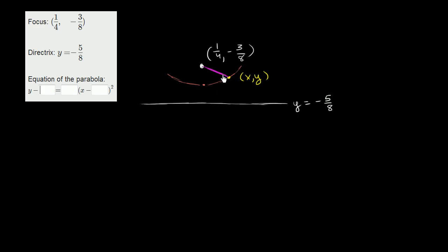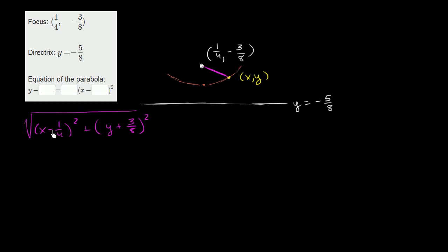That distance comes straight out of the distance formula, which comes from the Pythagorean theorem. It's going to be the square root of (x - 1/4)² + (y - (-3/8))², which is (y + 3/8)². The distance between that same point and the directrix is just a straight vertical line — it's y minus (-5/8), which is y + 5/8. To ensure this is always positive, we square it and take the square root.